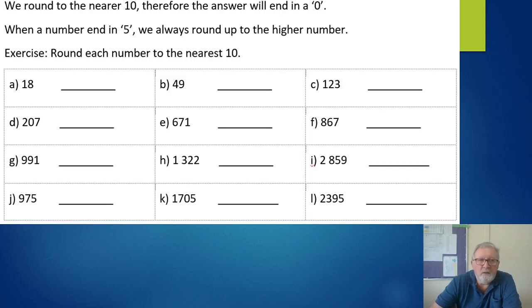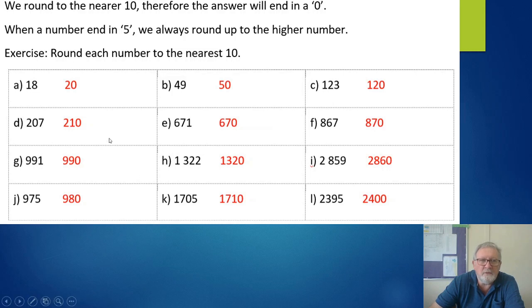Let's see how you went. So if I round 18, it goes up to 20. 49 is between 40 and 50 so rounds to 50. 123 rounds down to 120. 207 rounds up to 210. 671 rounds down to 670. 867 - well seven's more than five so we take it up - 870. 991 rounds down to 990. 1322 - 1320. I'll let you have a look at the rest of those and mark them. I'm moving on, so if you haven't marked those, pause now, finish marking and then let's move on.